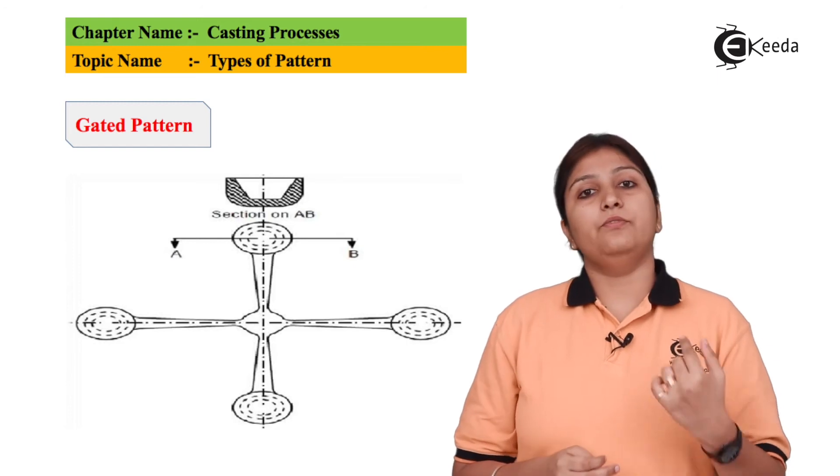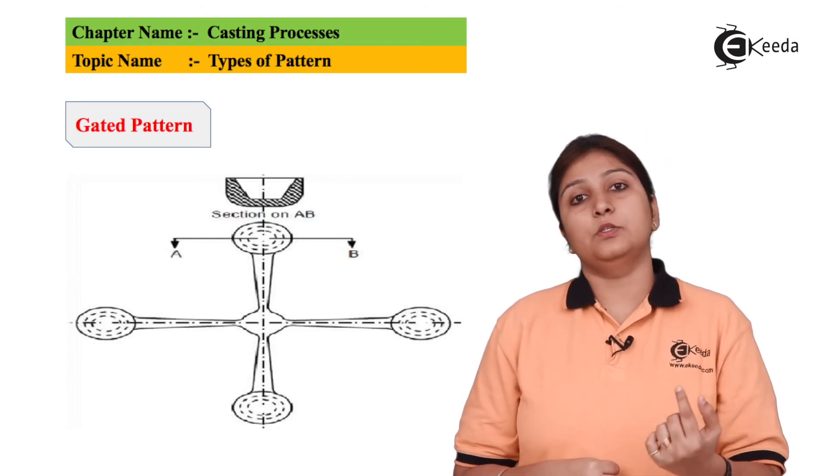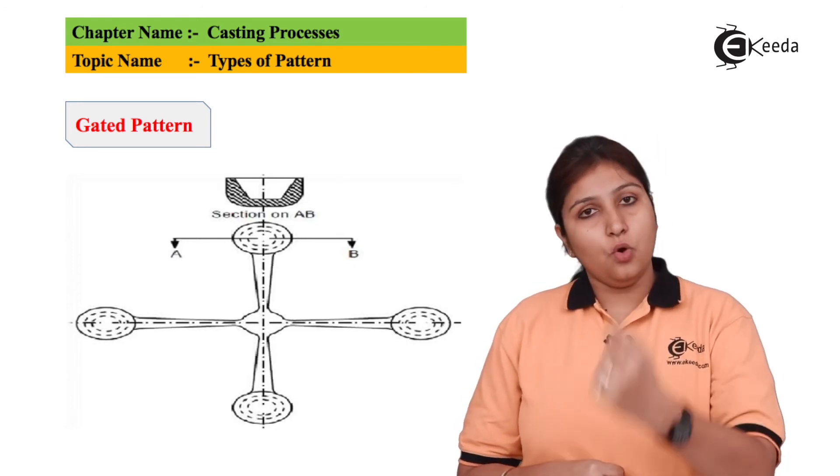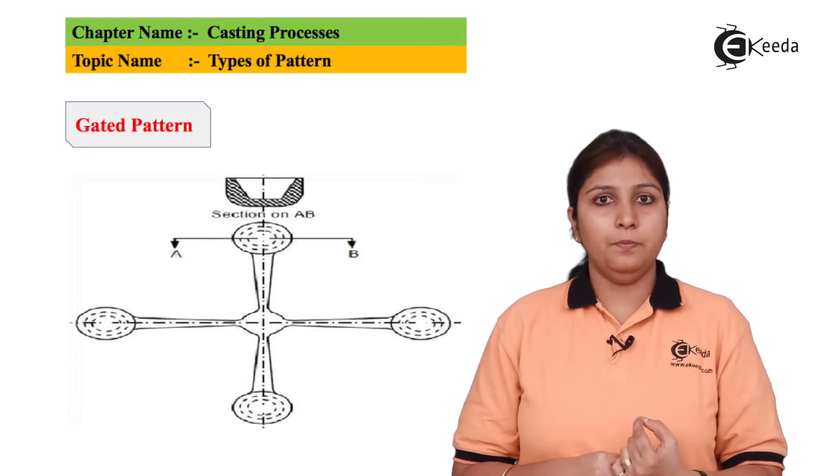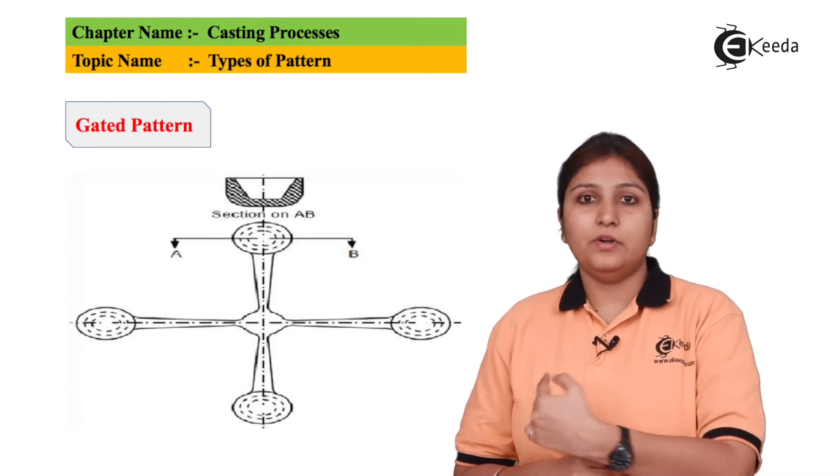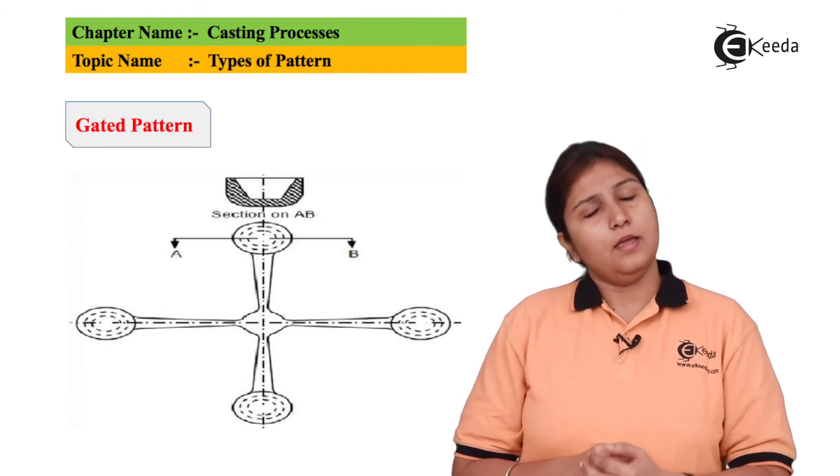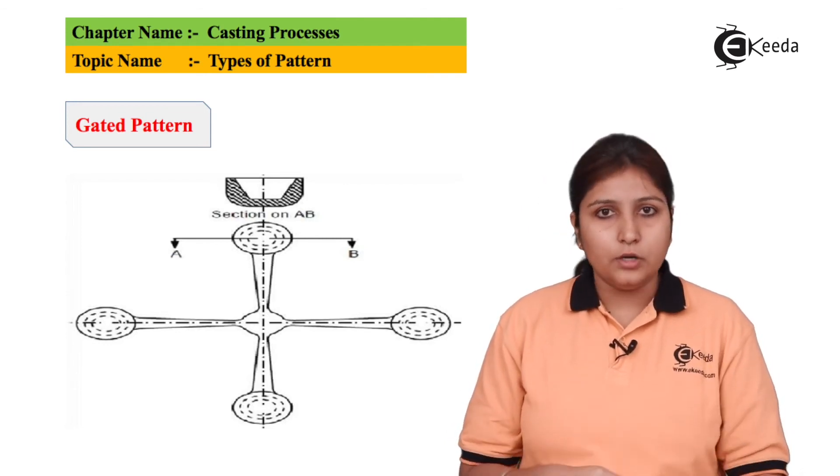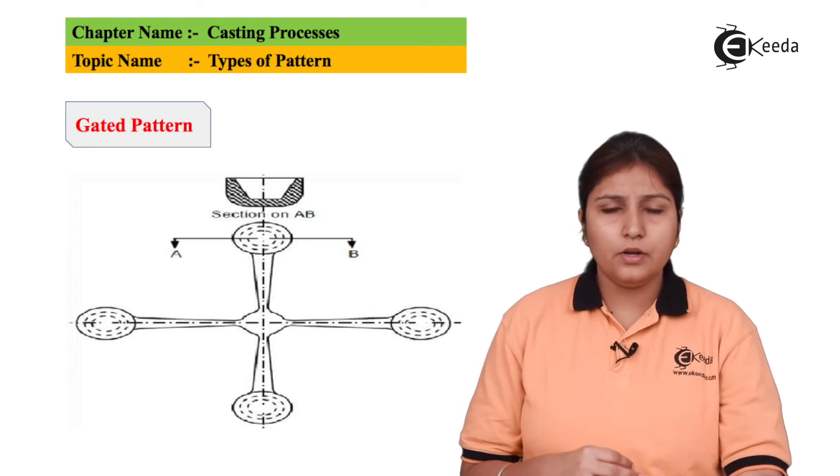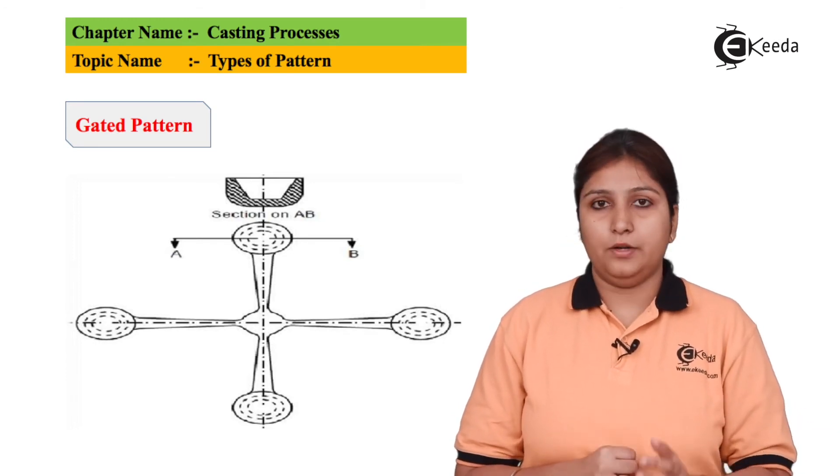So gated pattern works in the same way. There is a single gate and there are different small small cubes or different small small sections. So the material comes from a single pipe, it goes to different sections and it occupies, it fills the section and it is cooled, it is solidified, it is gone under different heat treatments and finally the object is made.